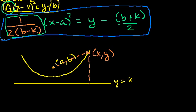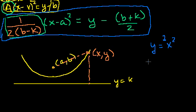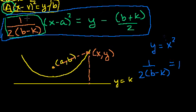Although it looks a little bit hairier than most parabolas we see, if you look at it closely you'll realize it is indeed a parabola. For example, the classic parabola is y is equal to x squared. How is this the same thing? Well, in this case the coefficient out here is just equal to 1, so 1 over (2b minus k) is equal to 1.